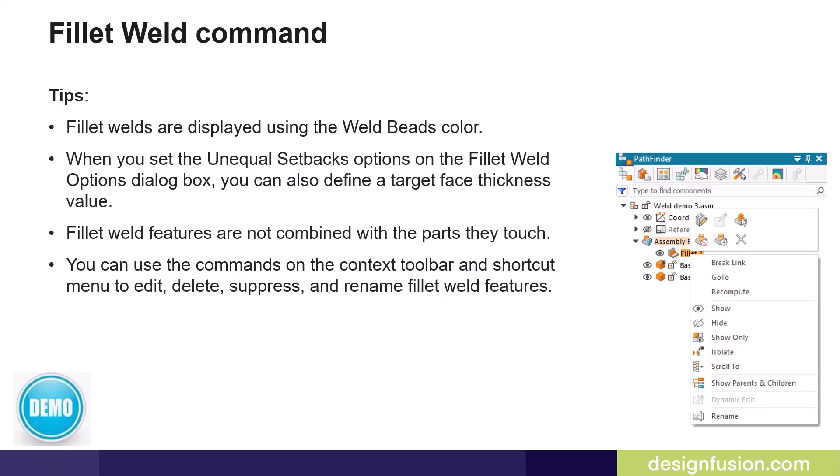Some additional information regarding fillet welds. A fillet weld feature is placed using the weld bead's color. When you set the unequal setback options on the Fillet Weld Options dialog box, you can also define a target face thickness value. Fillet welds are not combined with the parts they touch, and you can use the commands on the context toolbar and shortcut menu to edit, delete, suppress, and rename fillet weld features.